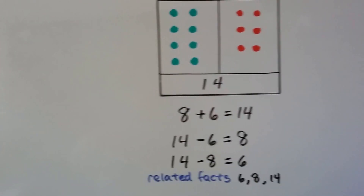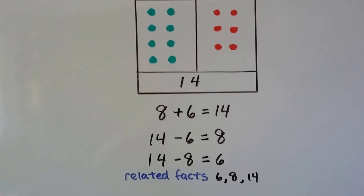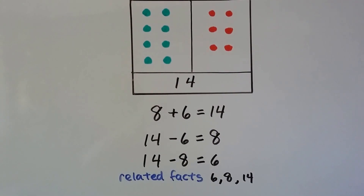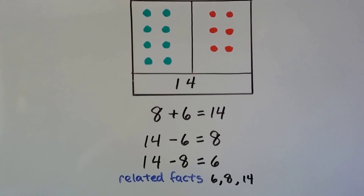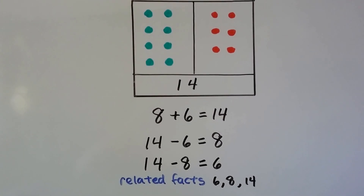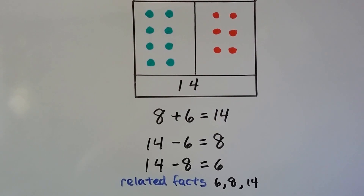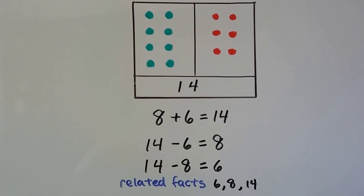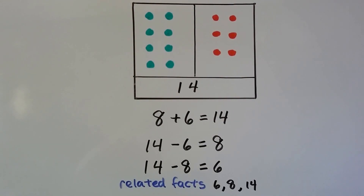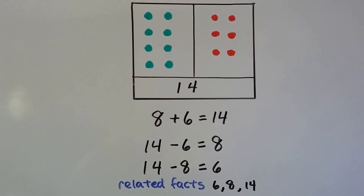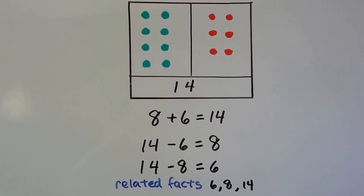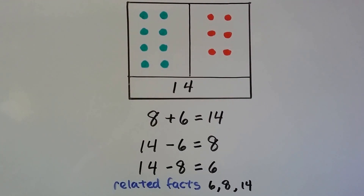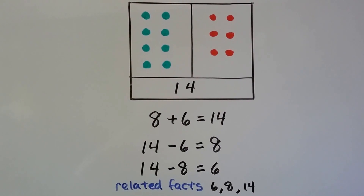Now we've got 8 green dots and 6 red dots. 8 plus 6 equals 14. If we have 14 dots and we take away the 6 red ones, we'll only have the 8 green ones left. And if we have 14 dots and we take away the 8 green ones, we'll only have the 6 red ones left. The related facts are 6, 8, and 14.